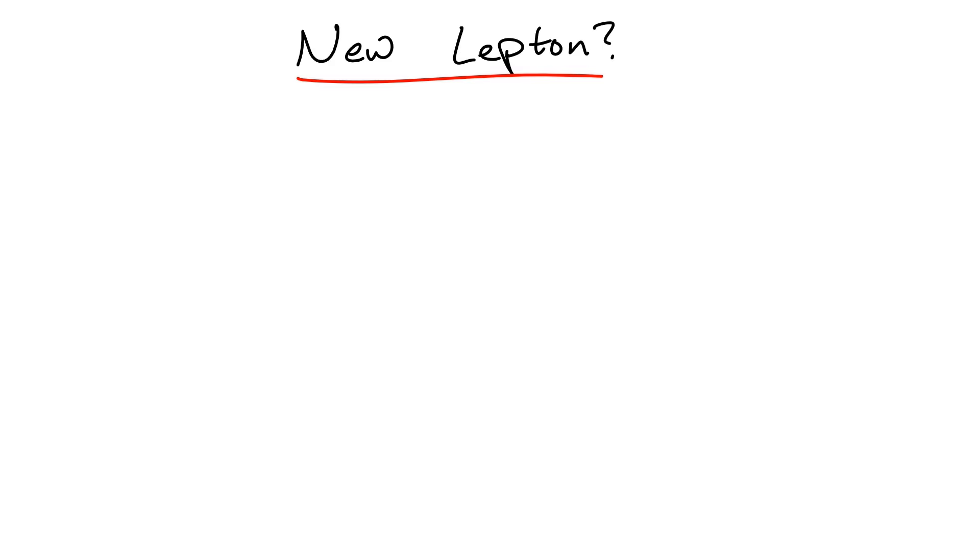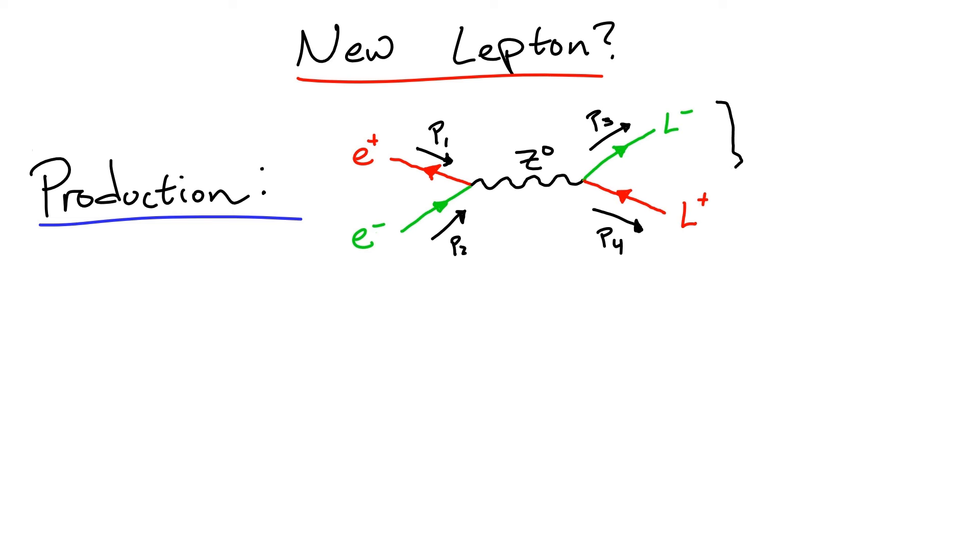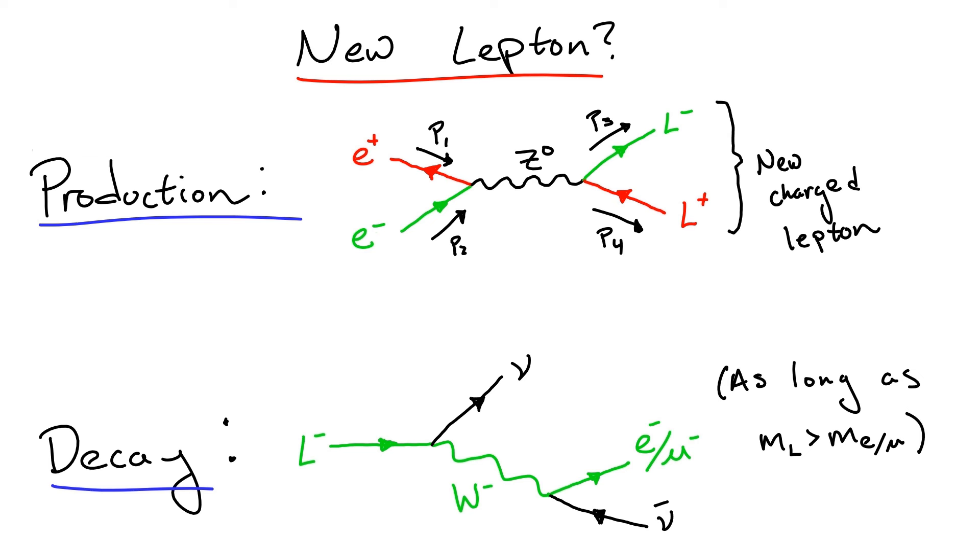Now if these leptons were treated the same way as the electron and muon according to the Standard Model interactions, then they could be produced the same way that we can produce, for example, muons. Just like muons, it would be expected that such new leptons would be unstable and would decay via weak interactions through charged current interactions with the W boson. Since the electron and muon are treated pretty much equally in weak interactions, aside from mass effects, it would be expected that this new lepton could decay either into electrons or muons, along with their associated neutrinos.